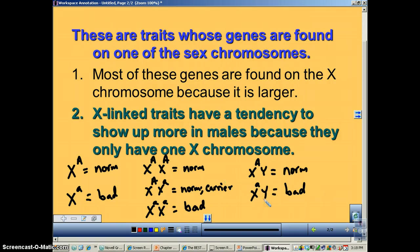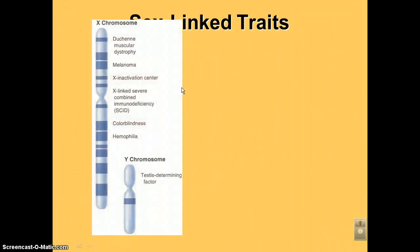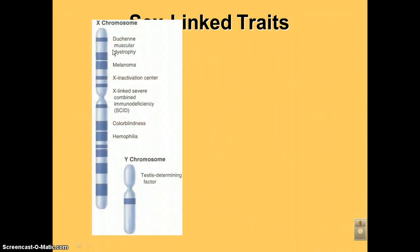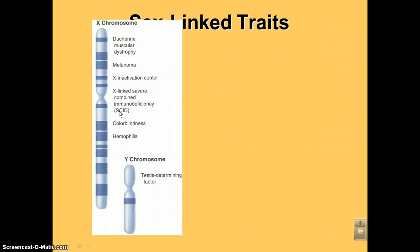All of these sex-linked recessive disorders are going to show this inheritance pattern. Here we have a picture of the two chromosomes, and notice that the X chromosome is way bigger than the little Y. On this gene map, we show the locations of some sex-linked traits.